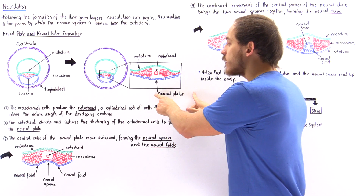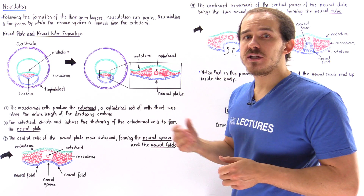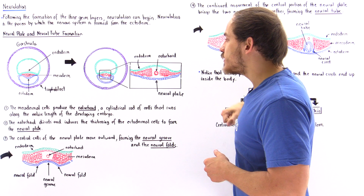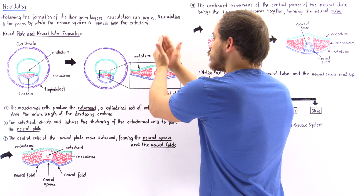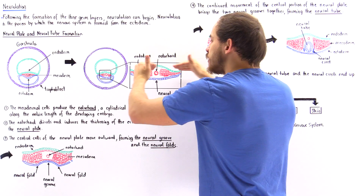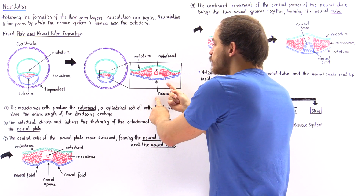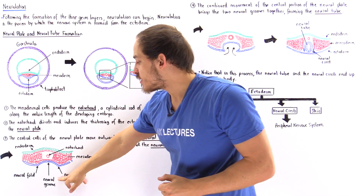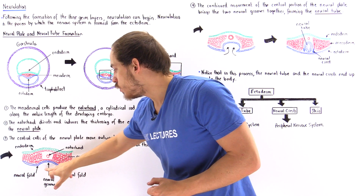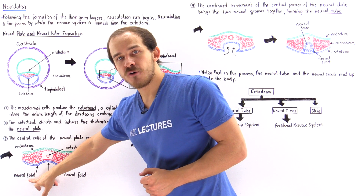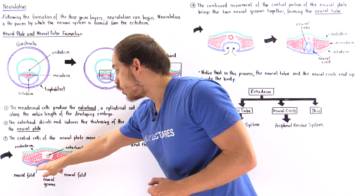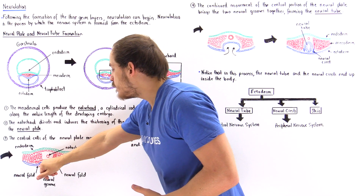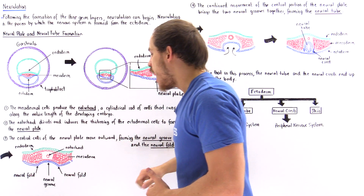It is the ectodermal cells of the neural plate that eventually give rise to the central and peripheral nervous system. The notochord stimulates the inward motion — the invagination — of the neural plate towards the notochord. What we begin to produce is something called the neural groove, and the two folds on either side are called the neural folds. This is the neural groove produced as a result of the inward motion of the central portion of the neural plate.